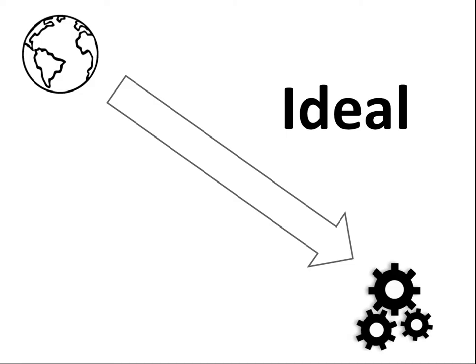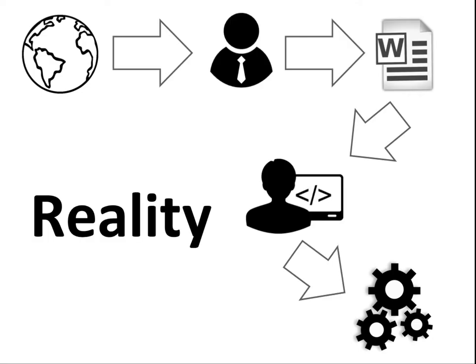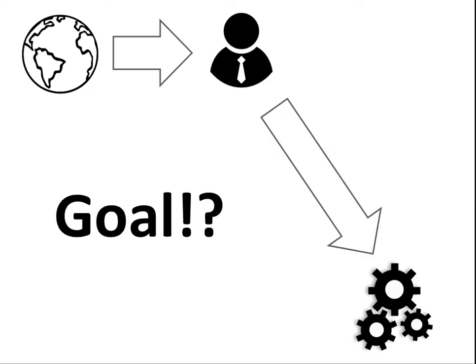So, business agility. What you really want is that as the world changes around you — your business, your business environment — as that changes, you want these changes to be reflected in your software system. In practice things are a bit different. There are business analysts who try to understand how the world changes, then they put their knowledge into a Word document or other informal things, and that is then handed to developers who will then code the system.